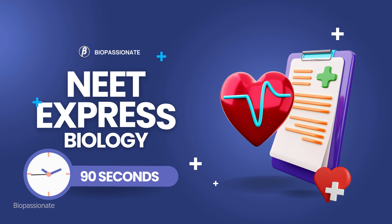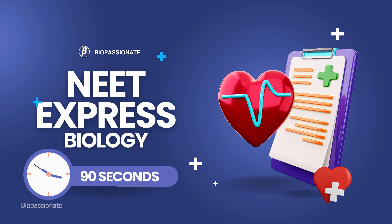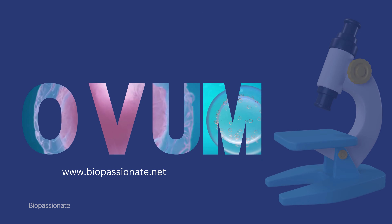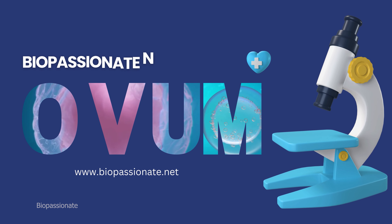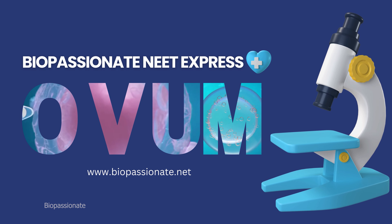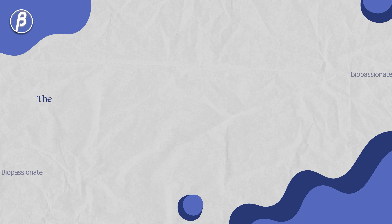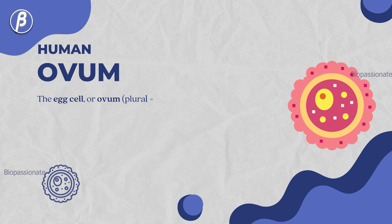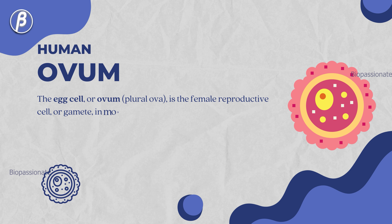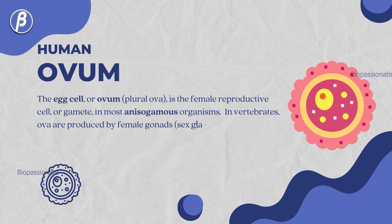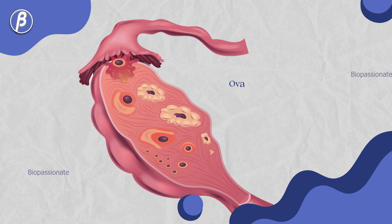Welcome to NEET Express Biology in 90 Seconds: the structure of human ovum. The egg cell, or ovum, is the female reproductive cell in most anisogamous organisms. In vertebrates, ova are produced by female gonads called ovaries.